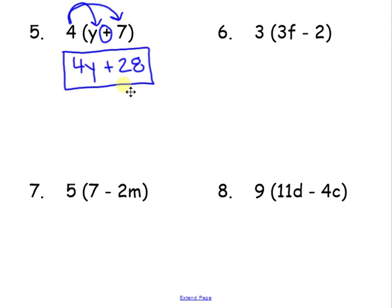Let's try number 6. 3 times 3f. Now we're multiplying, so 3 times 3 is 9, and then we have the f. My operation is subtraction, and 3 times 2 is 6. You cannot go any further. You don't know what f is, so you cannot combine 9f minus 6. So you stop right here and that's your final answer.